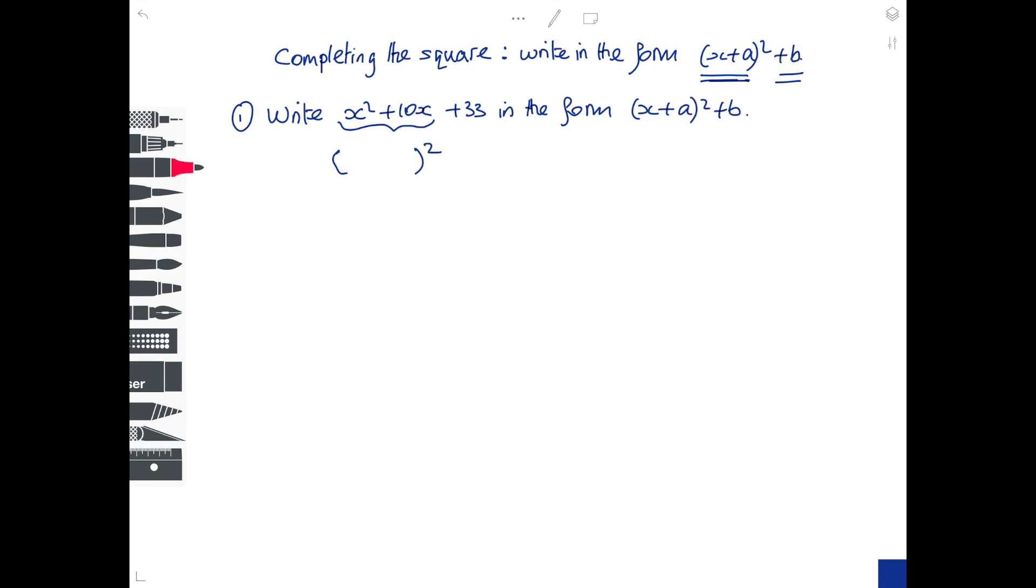If you think about squaring a bracket, those two brackets will be identical, and that times that has got to give you the first term. So fairly clearly that's got to be an x. x times x gives you your x². The term in x comes from the number there times x and the number at the end of that bracket times x.